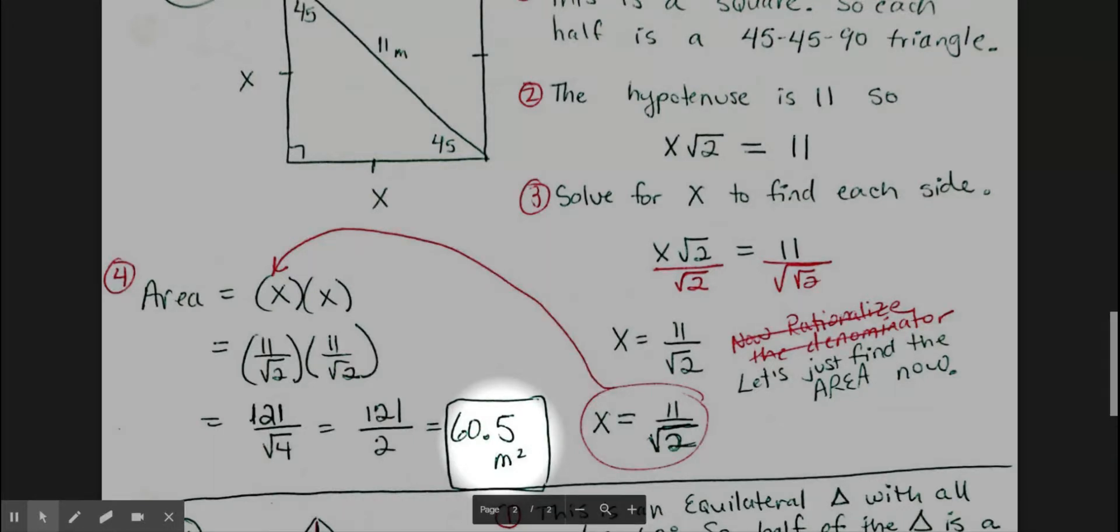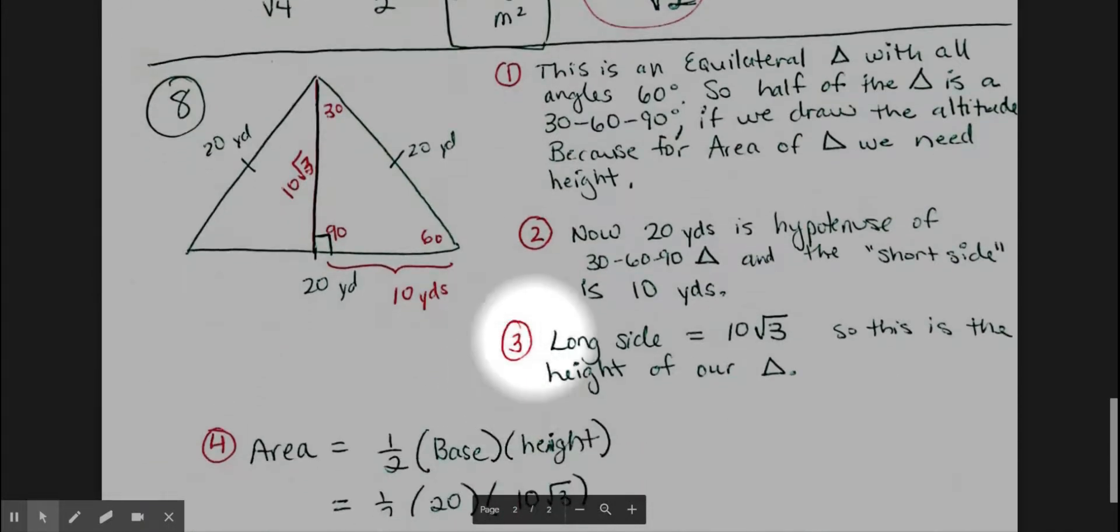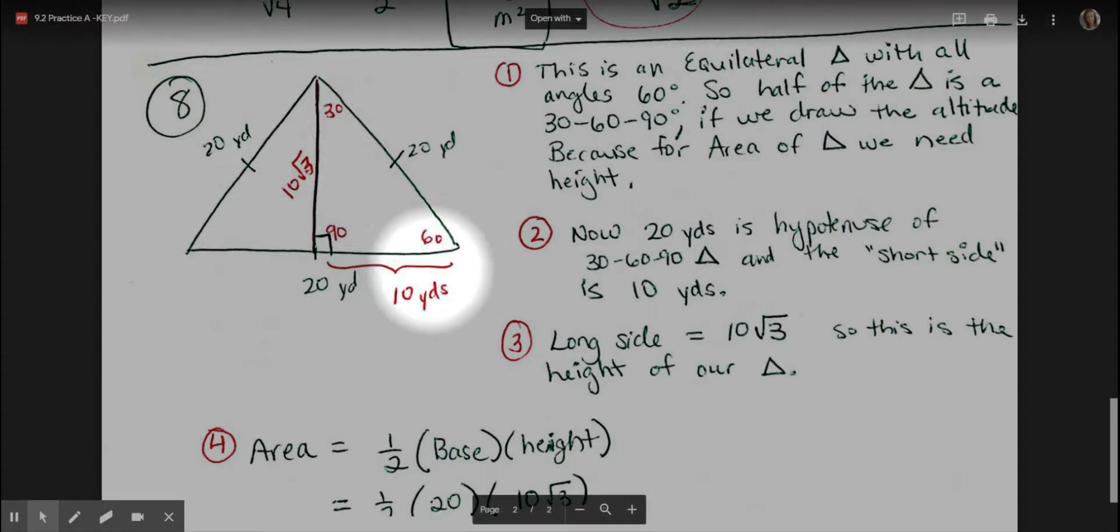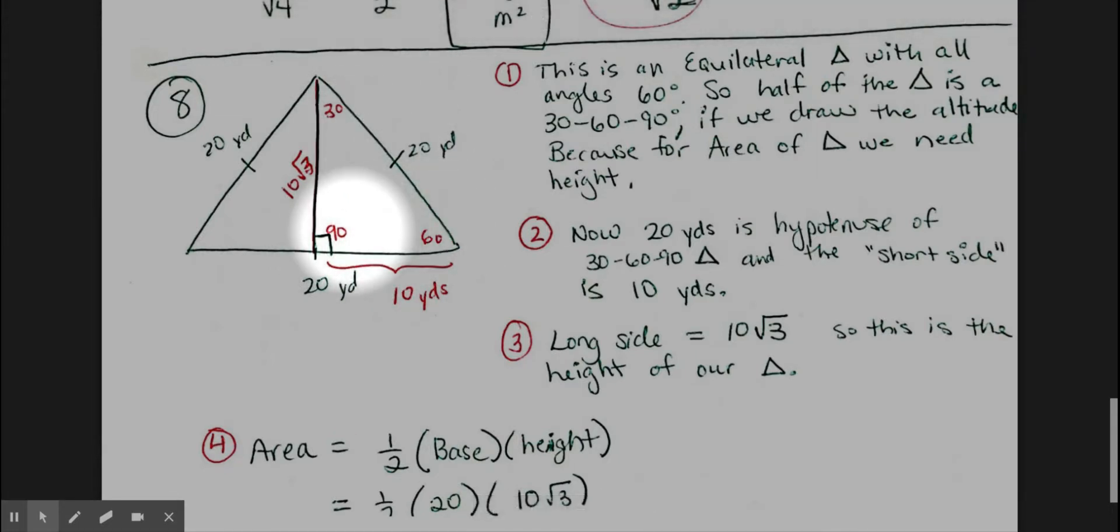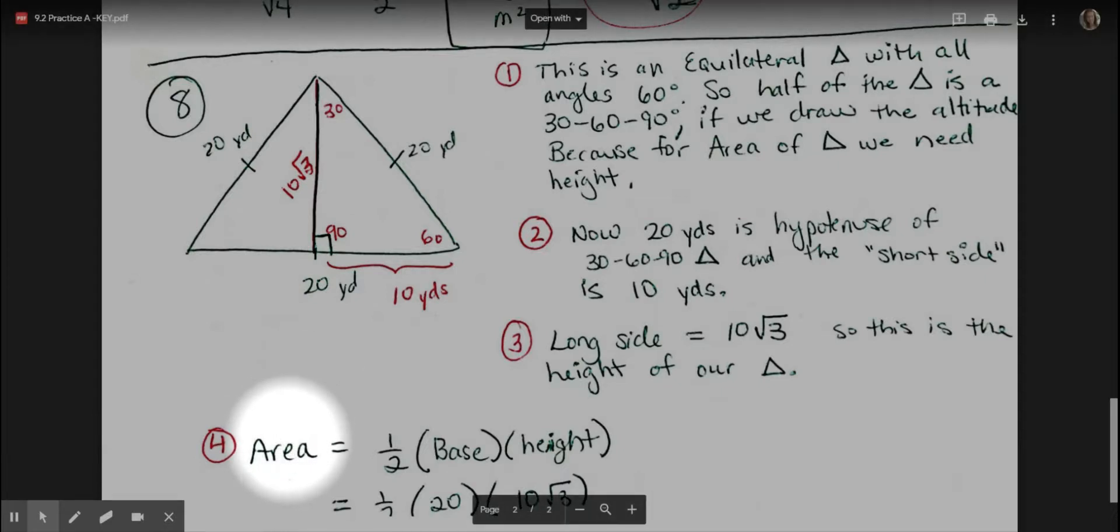121 divided by 2 is 60.5 meters squared. I know it's meters squared because area is always a squared quantity—it's two dimensions, x times x. Question 8 is an equilateral triangle with all angles 60 degrees. So when we have this line drawn down the middle, we end up with a 30-60-90 triangle on one side. That's half of the triangle.